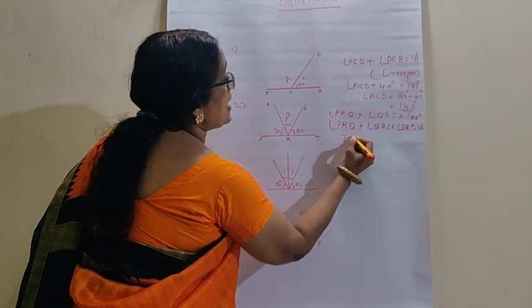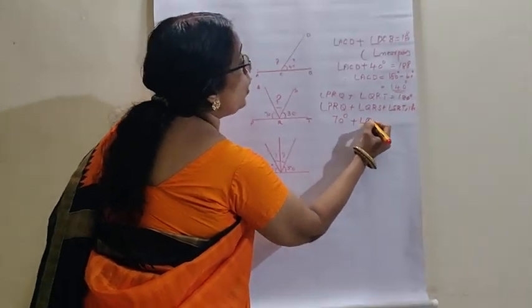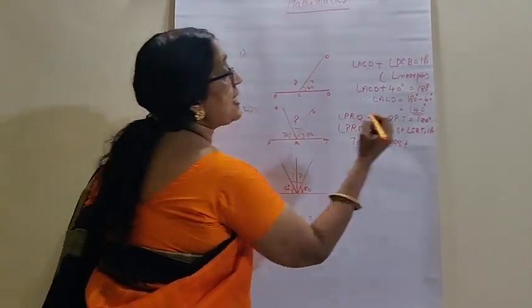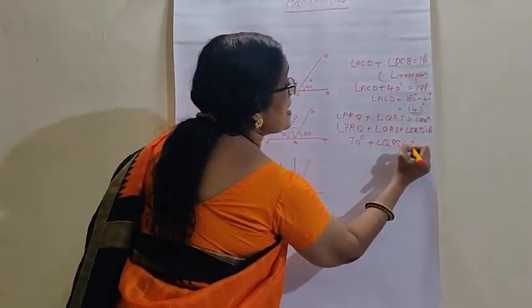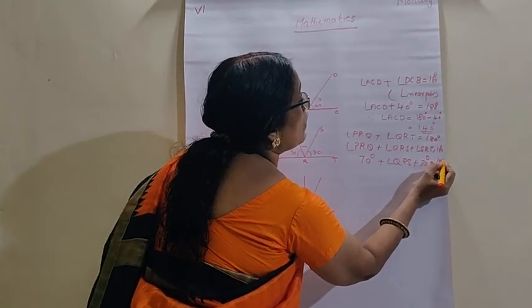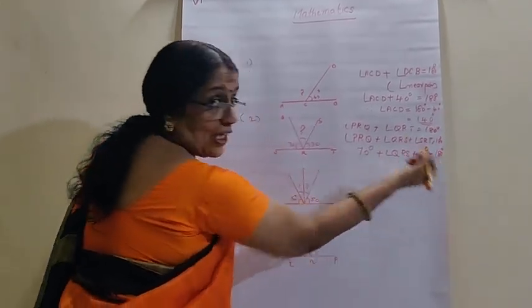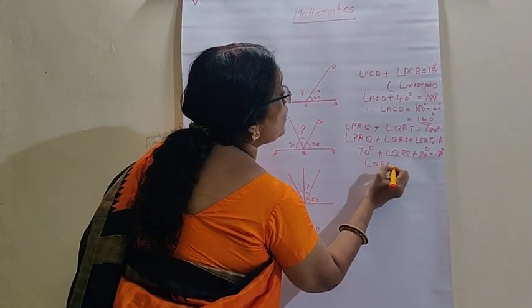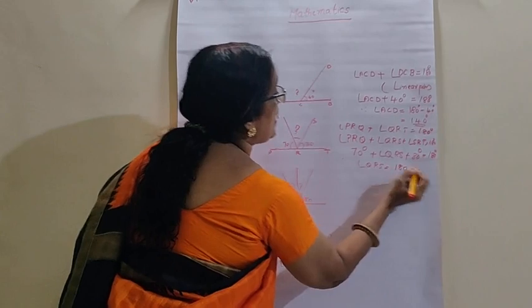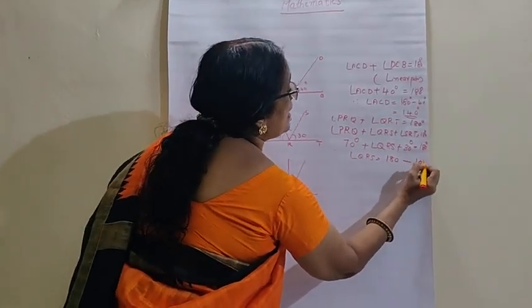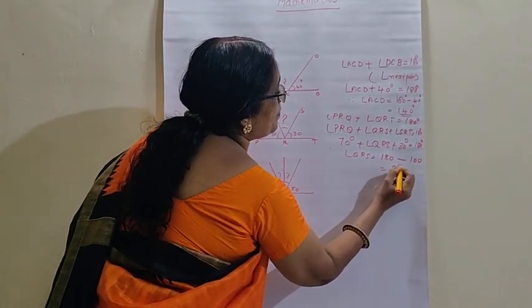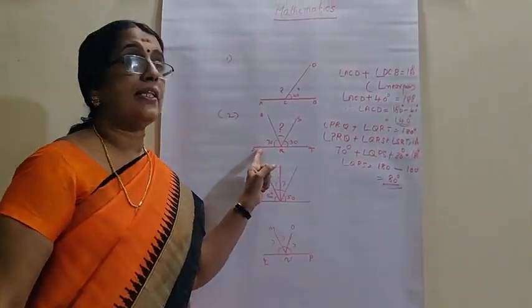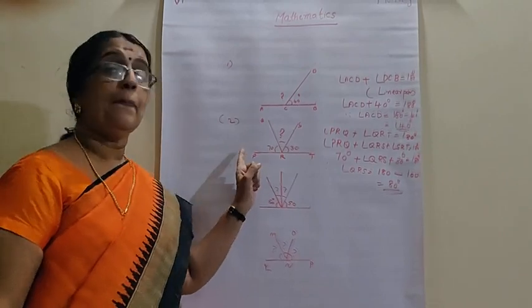So PRQ is 70 degrees. QRS we don't know. We write it as a variable. Then SRT is 30 degrees. So in this we can find out QRS. QRS equals 180 minus 70 plus 30, 100. That is 80 degrees. So, in this way, we can find the angle in between the two linear pair.